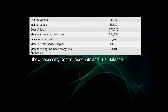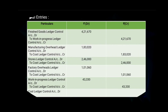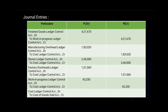Next is cost of sales; the amount is given as 3 lakh 71,780. The journal entry will be: Cost Ledger Control Account debit, to Cost of Goods Sold Account — amount 3 lakh 71,780 on the debit and on the credit side.